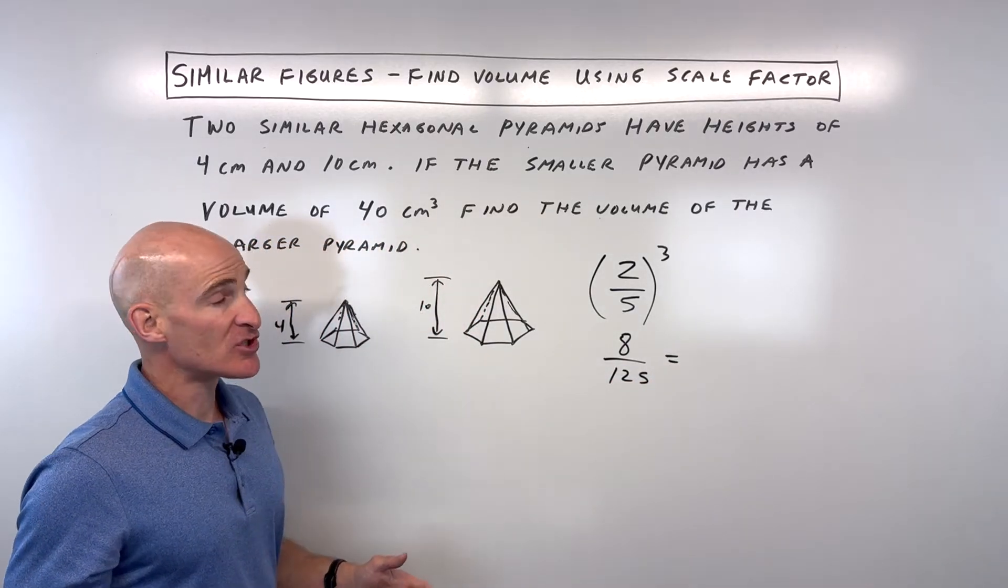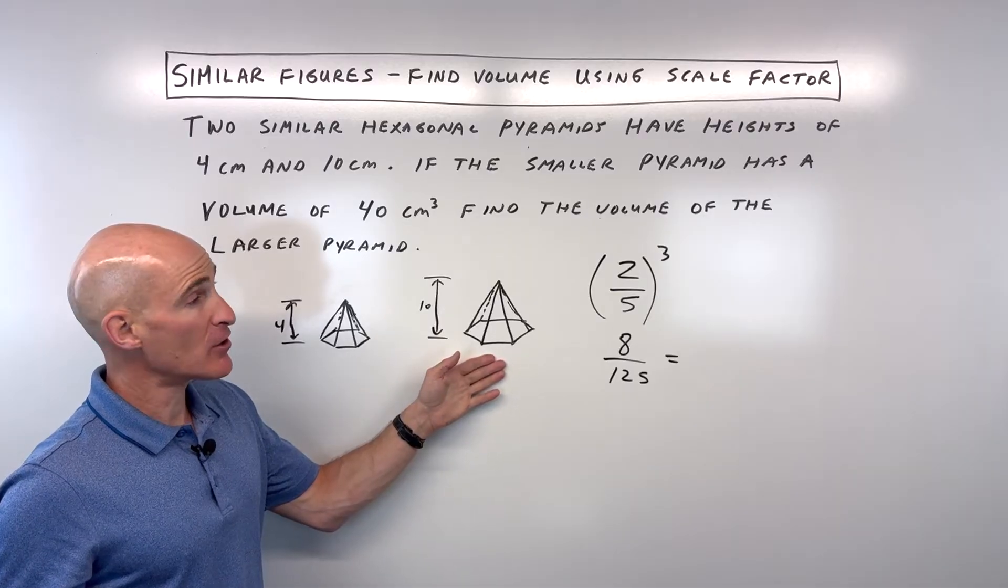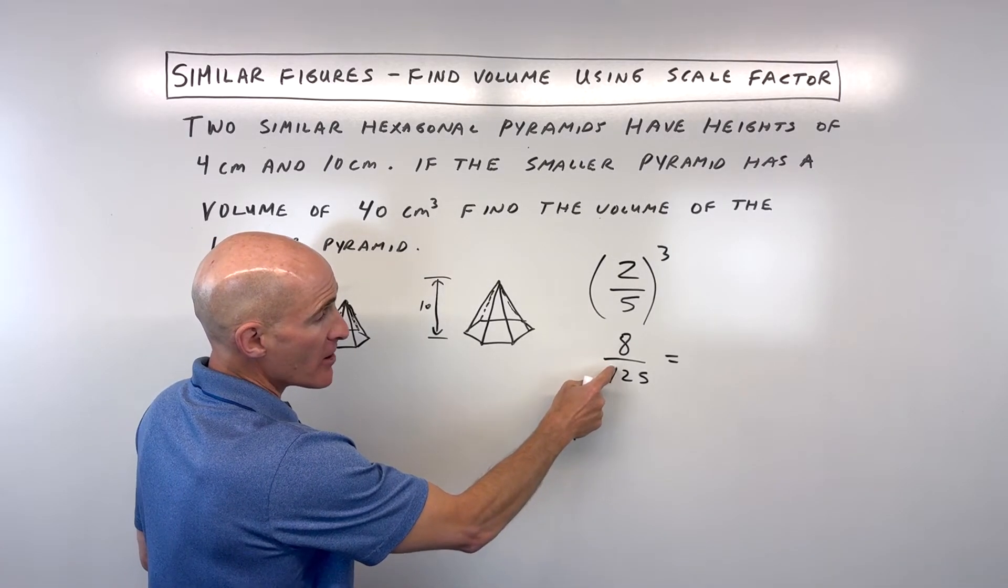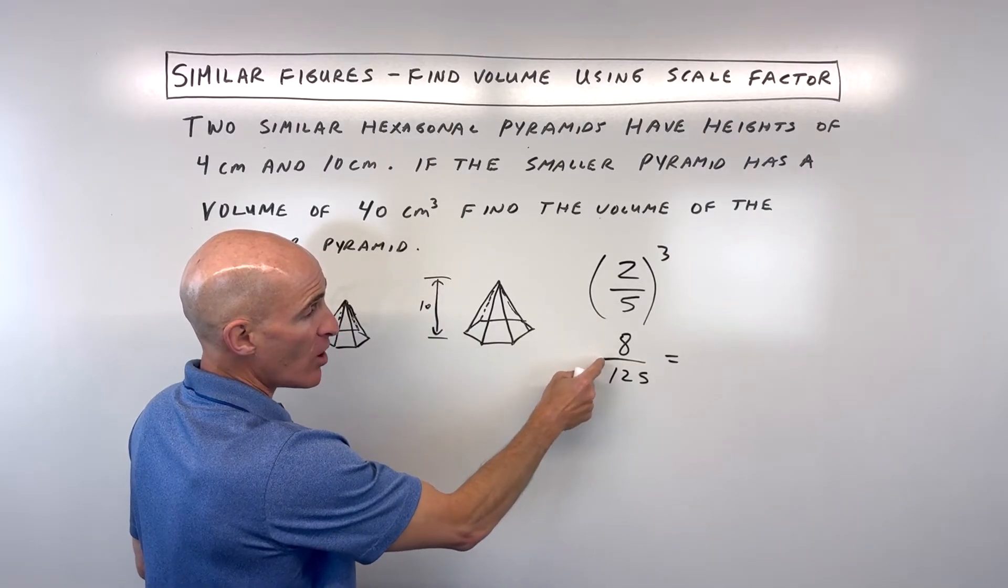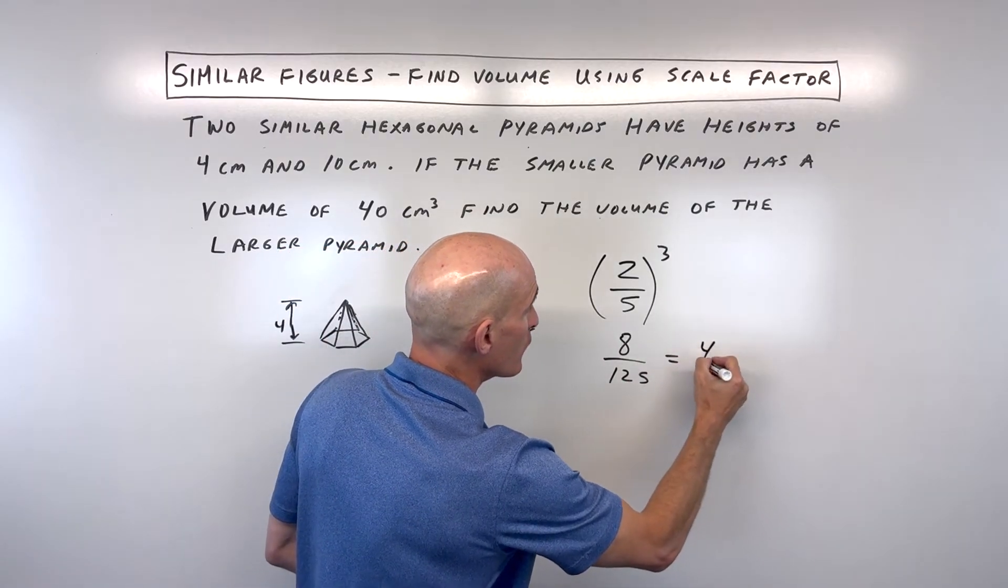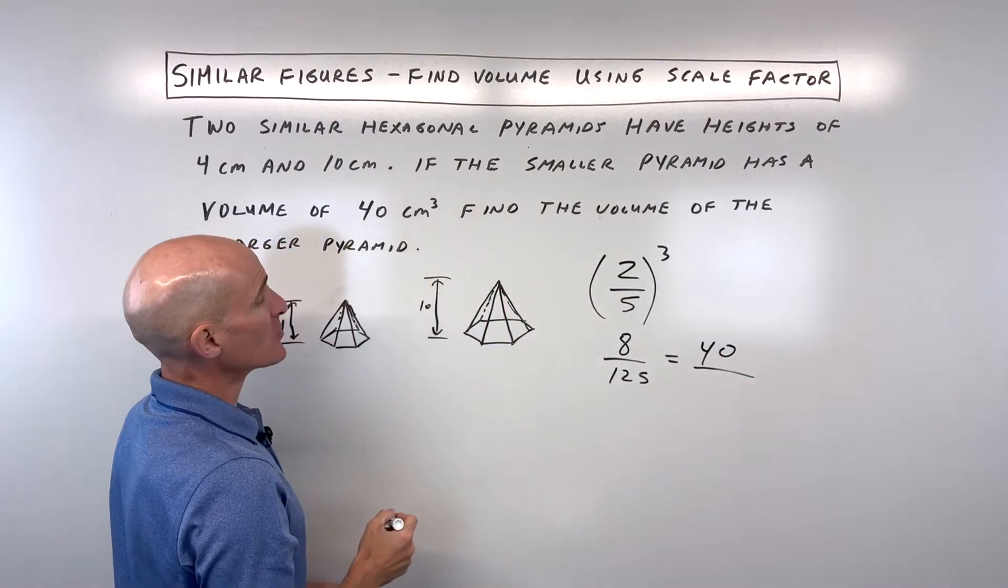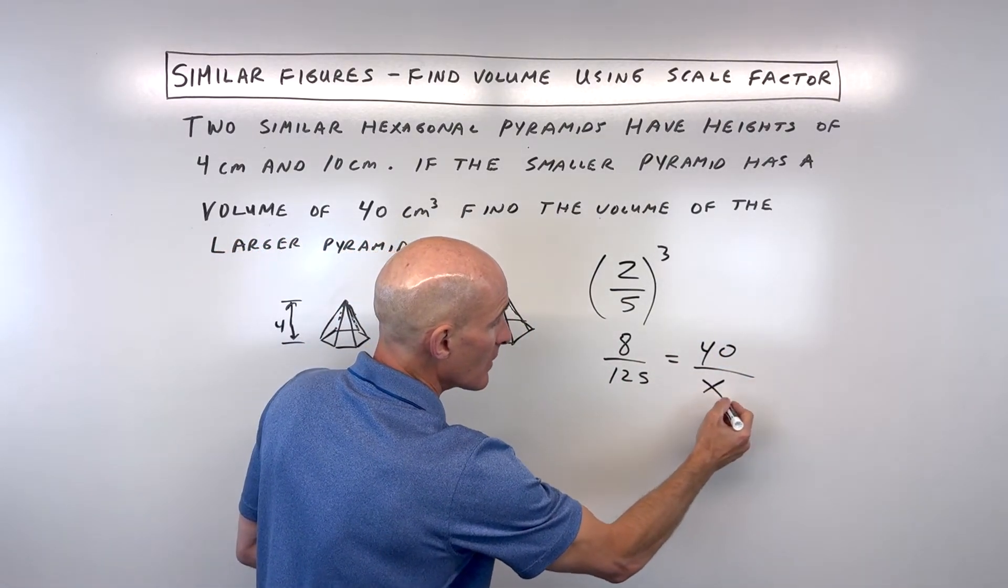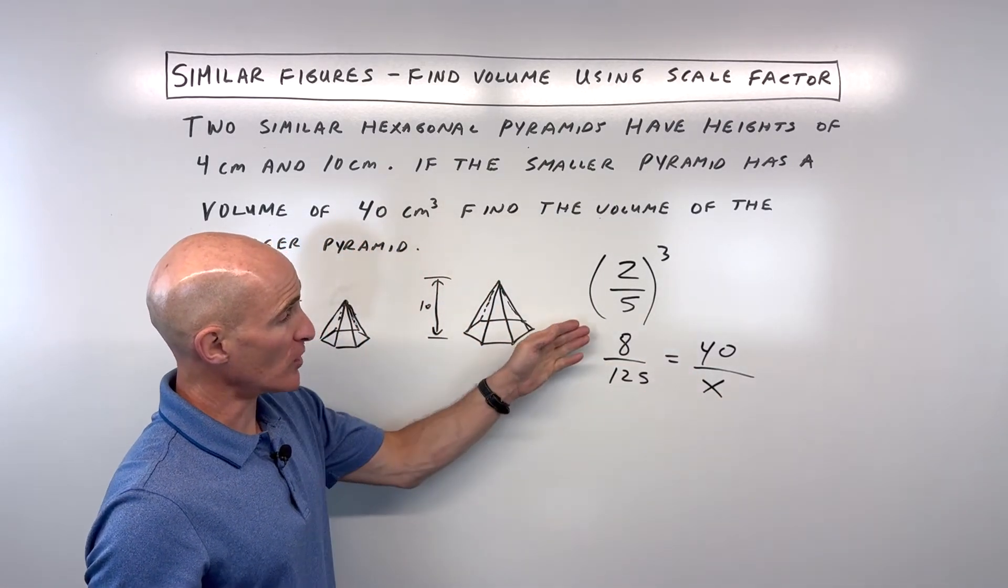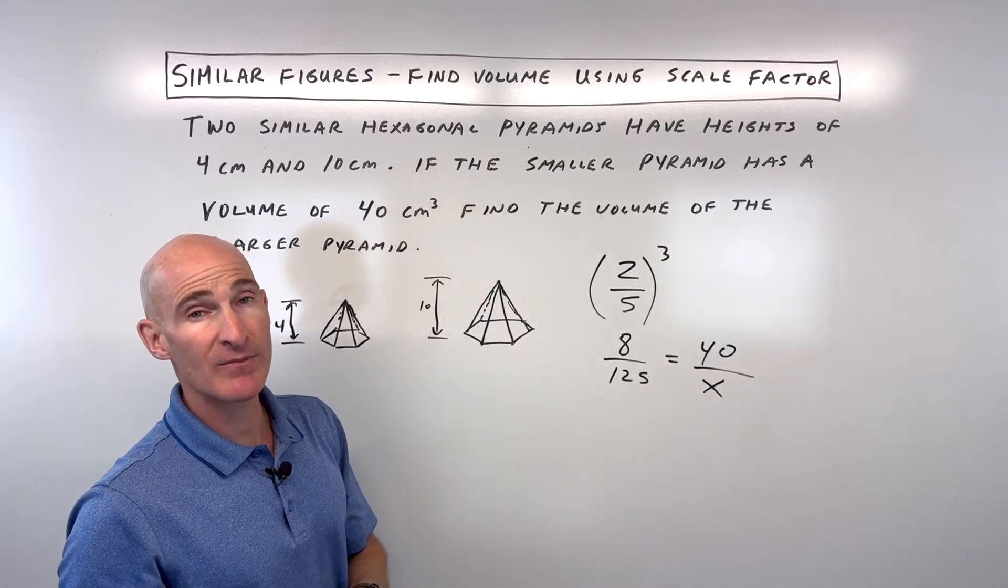We're going to make a proportion to solve for the volume of this larger pyramid. Notice we have small to large - 8 is smaller than 125. Volume of the smaller pyramid, which they tell us is 40 centimeters cubed, to the larger pyramid. We want to keep that consistent: small to large, or left to right.